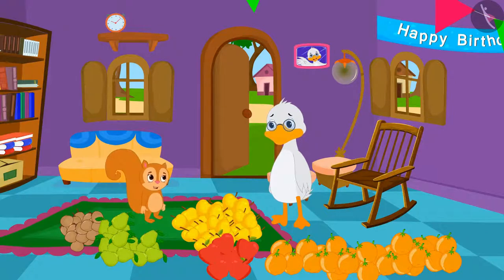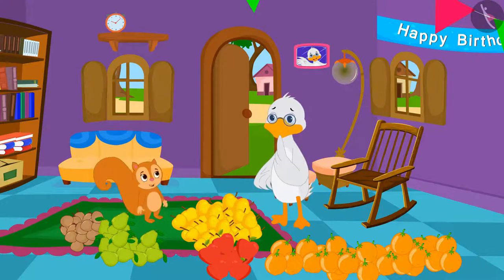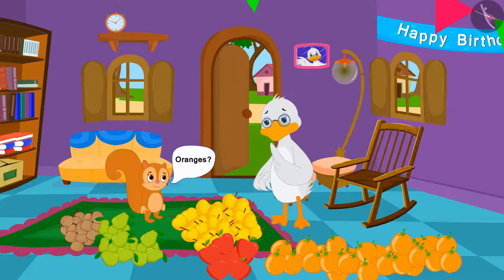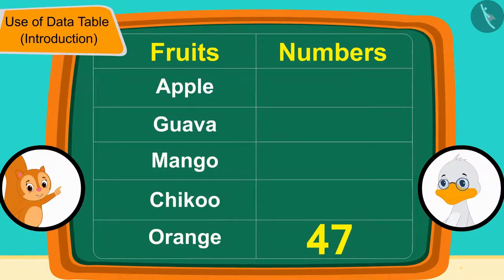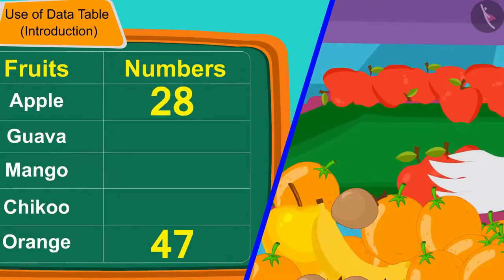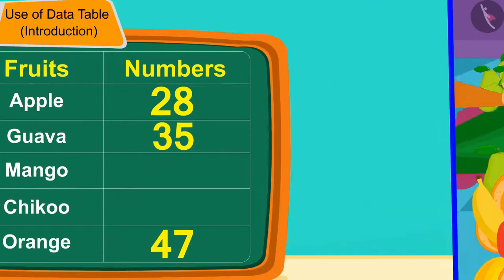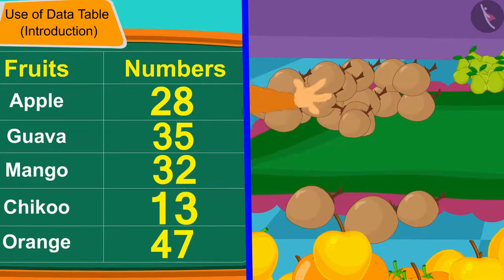"And we can very easily find which fruit is largest in number. Uncle, do you remember the number of oranges?" Chanda asked uncle. Uncle immediately said, "47." Chanda wrote this number in front of the orange in the table. Uncle and Chanda once again counted all the fruits and wrote their numbers in the table. The table is finally complete.